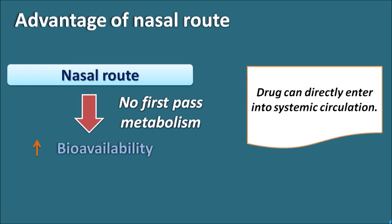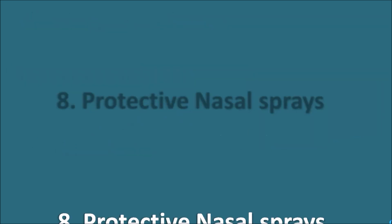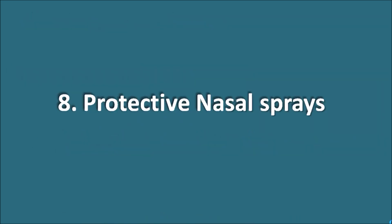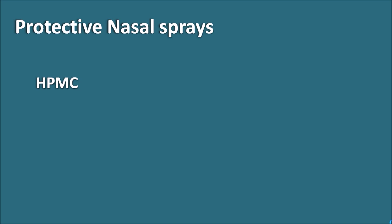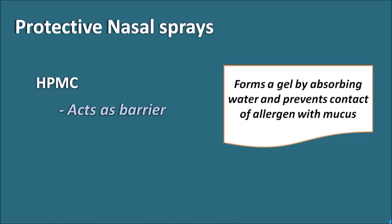The eighth type is HPMC (hydroxypropyl methylcellulose) nasal sprays. HPMC acts as a barrier, preventing contact between allergens and the nasal mucosa. It forms a gel by absorbing water, thereby acting as a physiological barrier between the allergen and the mucus, suppressing the allergic response.